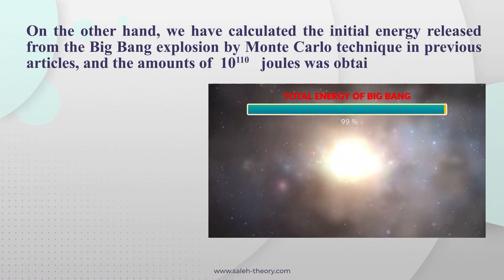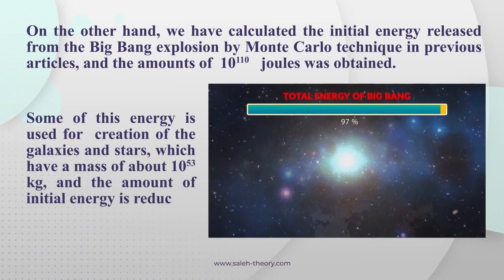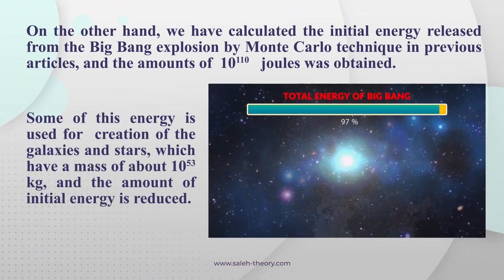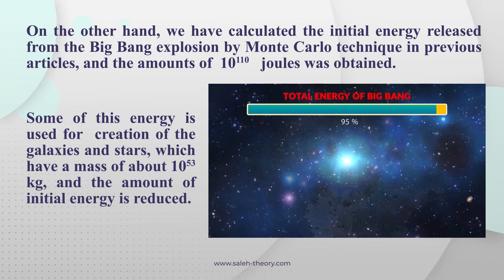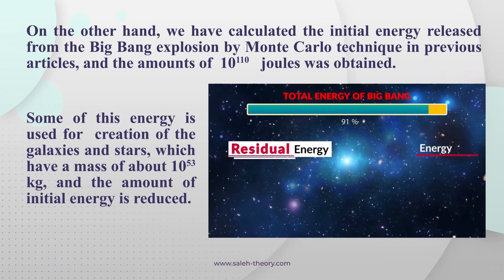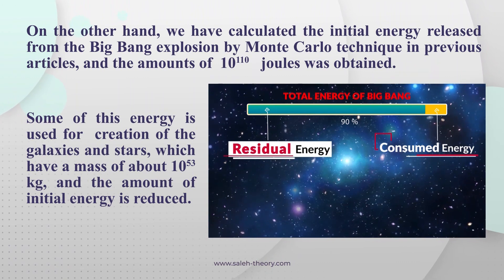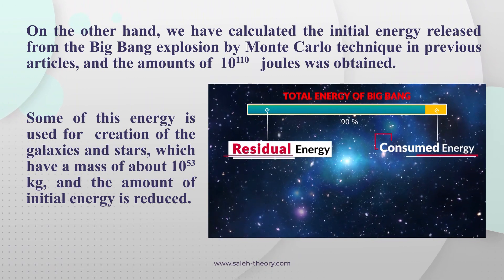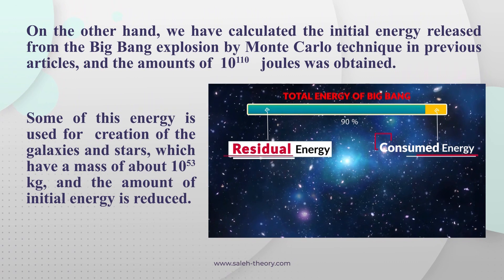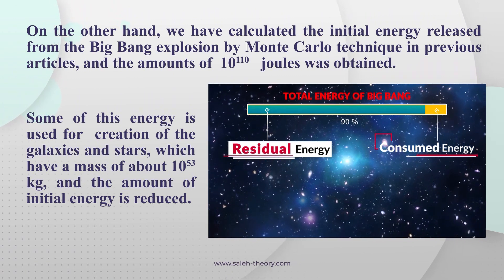We have calculated the initial energy released from the Big Bang explosion by Monte Carlo technique in previous articles, and an amount of 10 to the power of 110 joules was obtained. Some of this energy is used for the creation of galaxies and stars, which have a mass of about 10 to the power of 53 kg, and the amount of initial energy is thereby reduced.